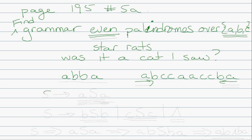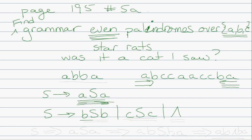So we're going to build this out. We start with S. Every time we add a letter on the left side, we need to add the same letter on the right side. So S goes to ASA — if we add an A to the front we also add an A to the end. Similarly, S can go to BSB or CSC. Since we need even palindromes, S has to end up as lambda. So we can say S also goes to lambda. We can add as many A's, B's, or C's as we want, but in the end we must reach lambda.